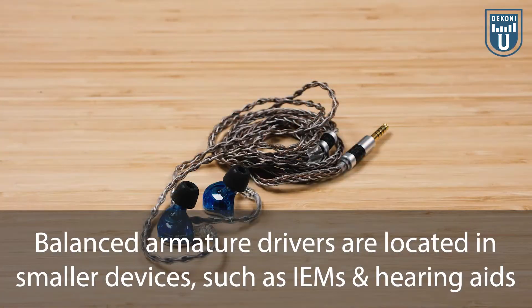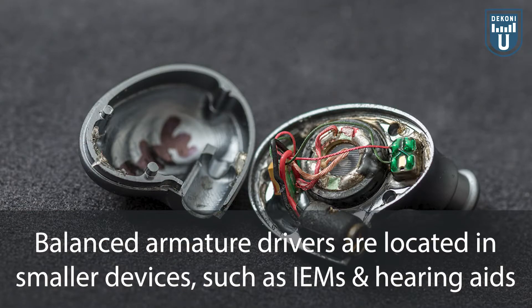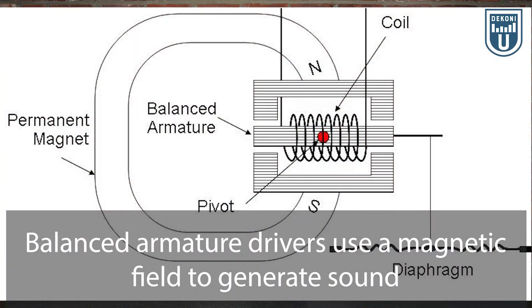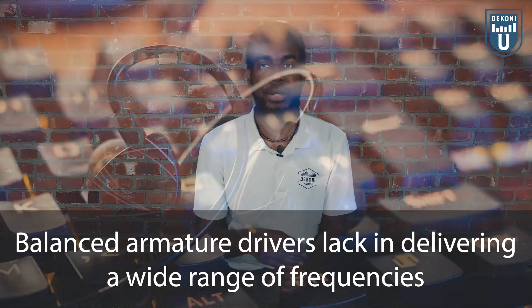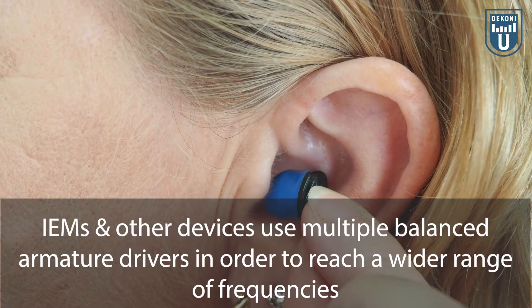Balanced armature headphone drivers are much smaller than the other drivers mentioned. You'll find these drivers in smaller devices such as in-ear monitors — shortened to IEMs — and hearing aids. Similar to dynamic and planar drivers, this driver uses a magnetic field to produce sound. It has a magnetic armature, or long-rod-looking device, resting on a pivot. The balanced armature pivots between two magnets once an electric current is sent through the coil, causing the diaphragm to move and create sound. Because balanced armature drivers cannot displace a good amount of air, they lack in delivering a wide range of frequencies such as bass, so many IEMs use multiple balanced armature drivers to reach a wide range of frequencies.